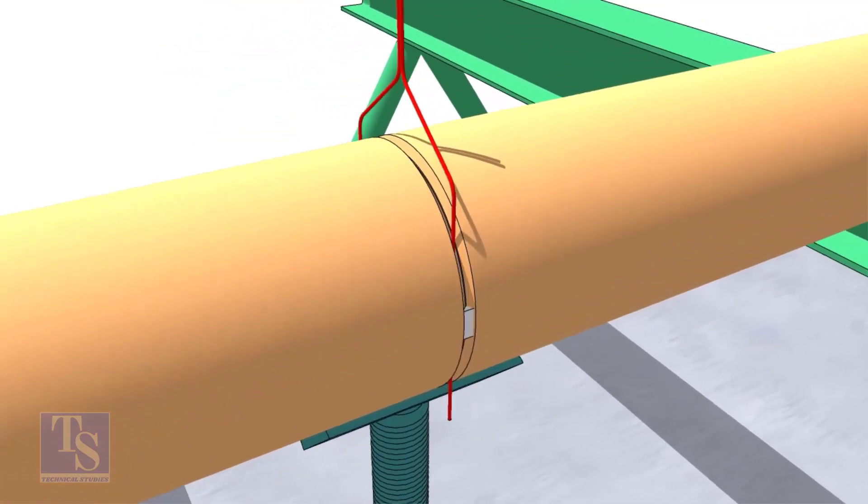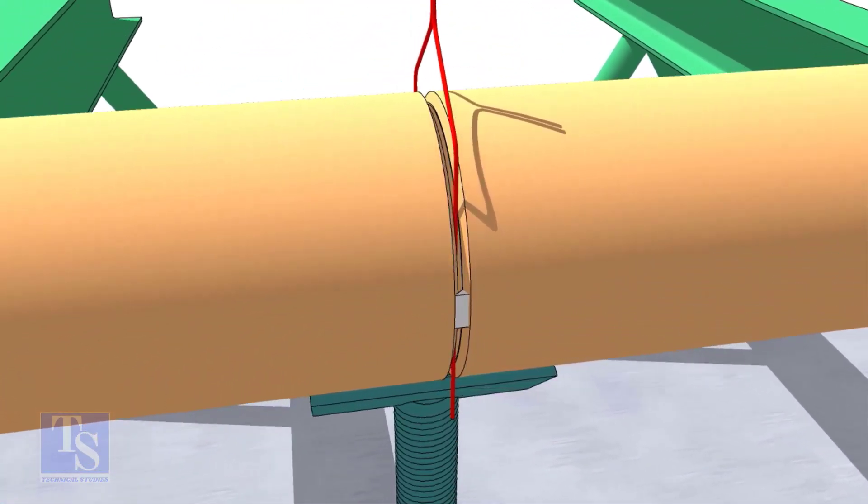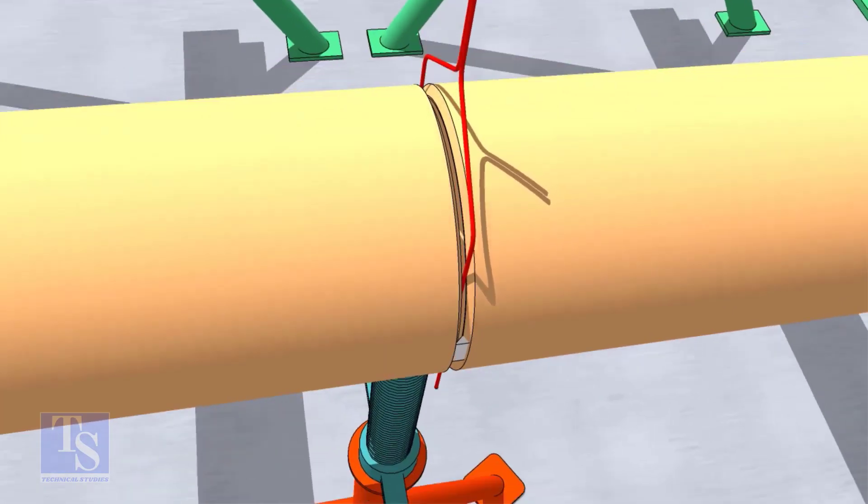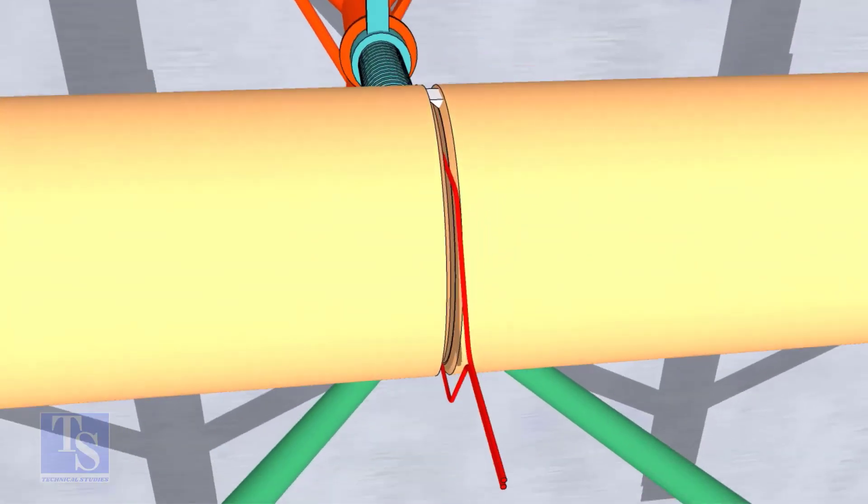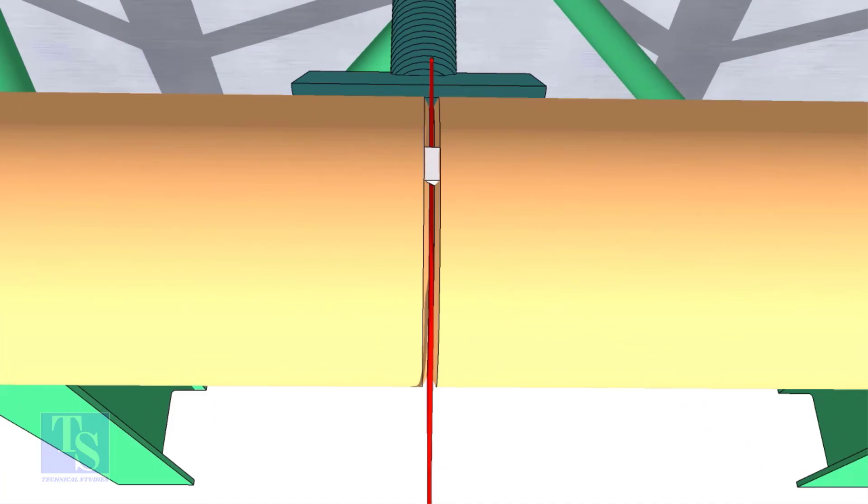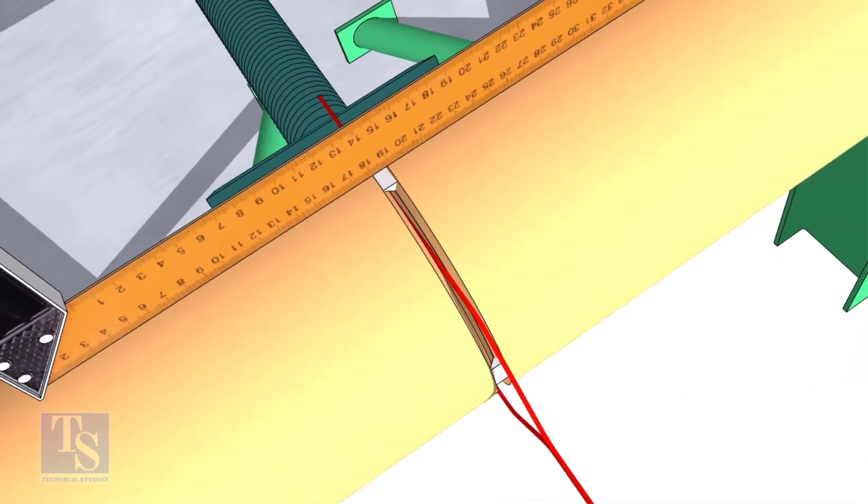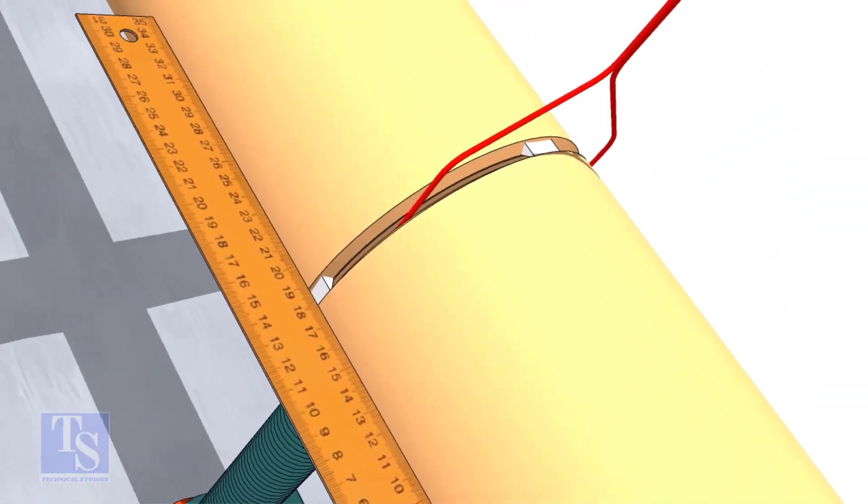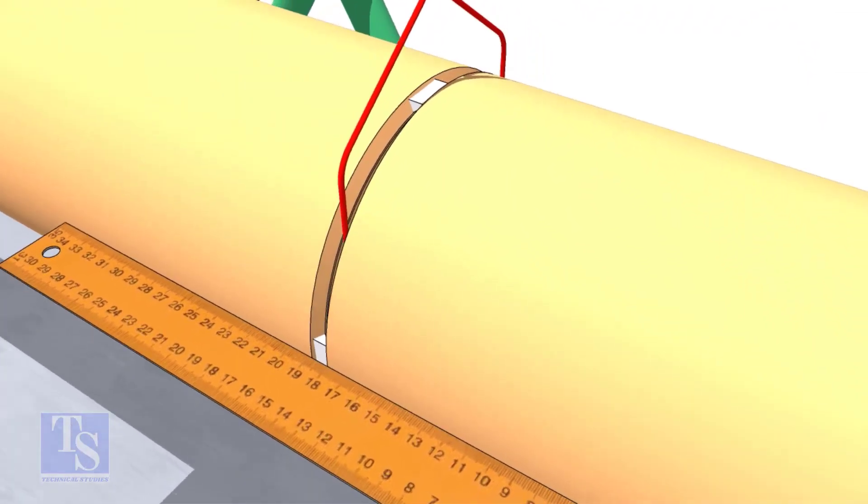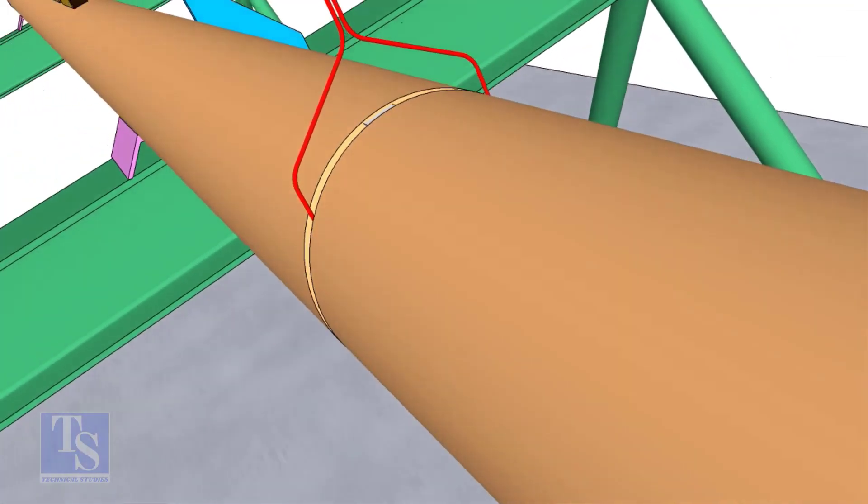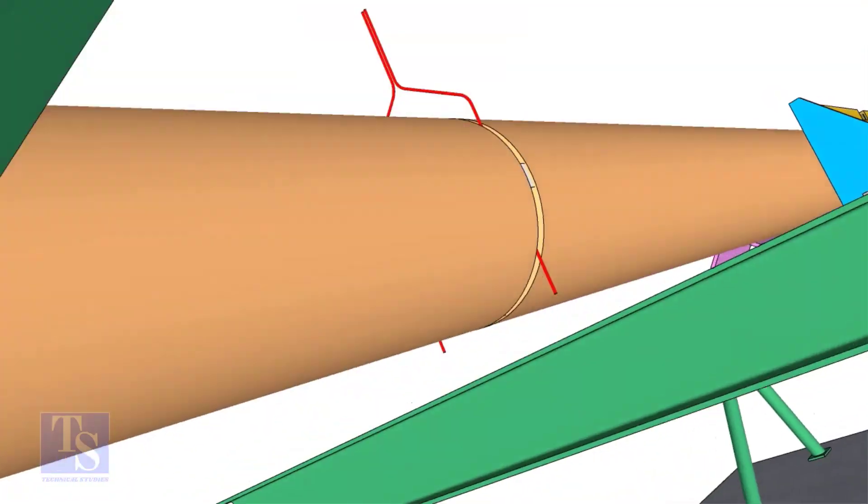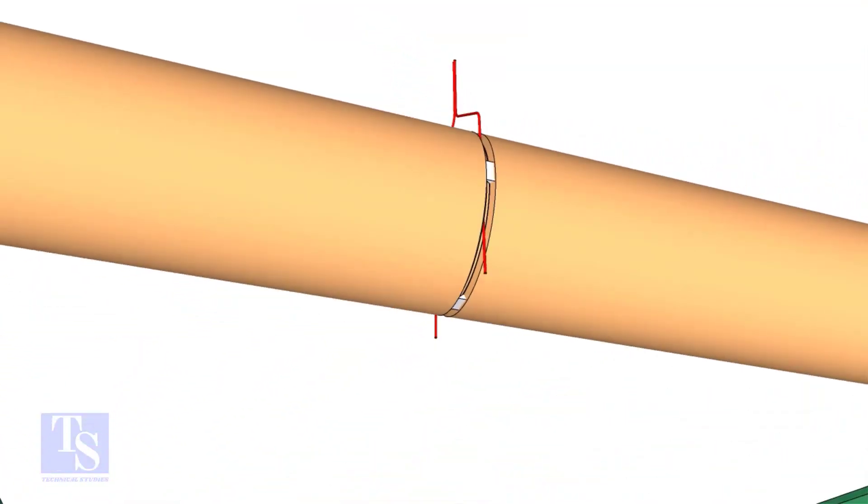Tack weld on both sides of the pipe, then the top and bottom of the joint. Don't forget to cross-check the overlap.